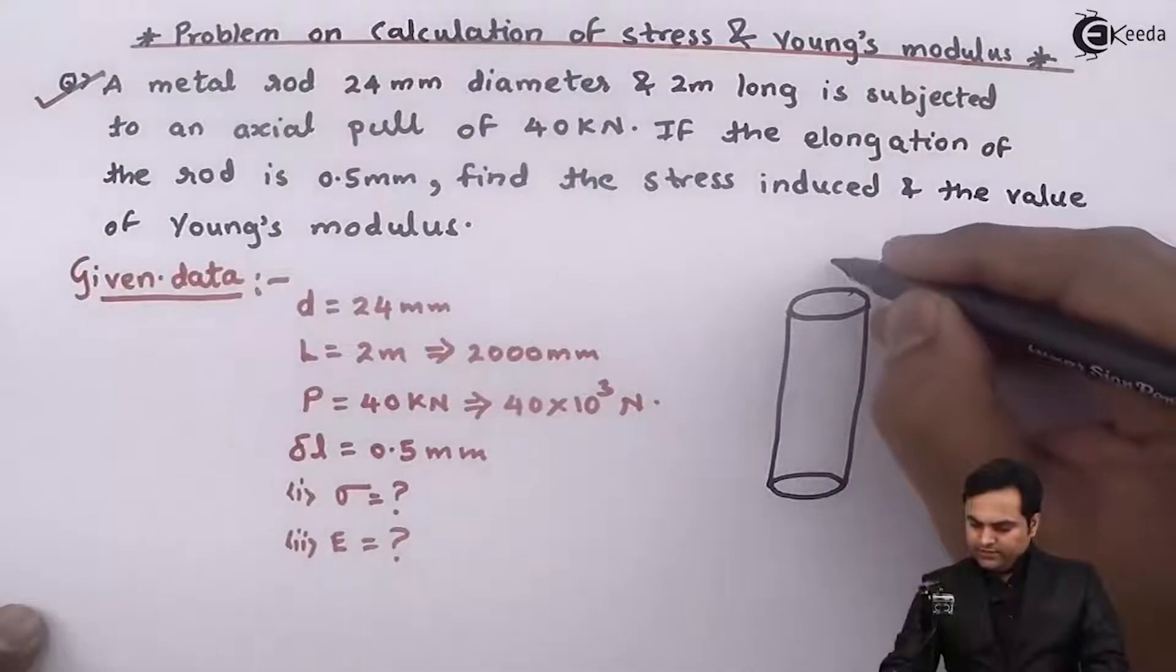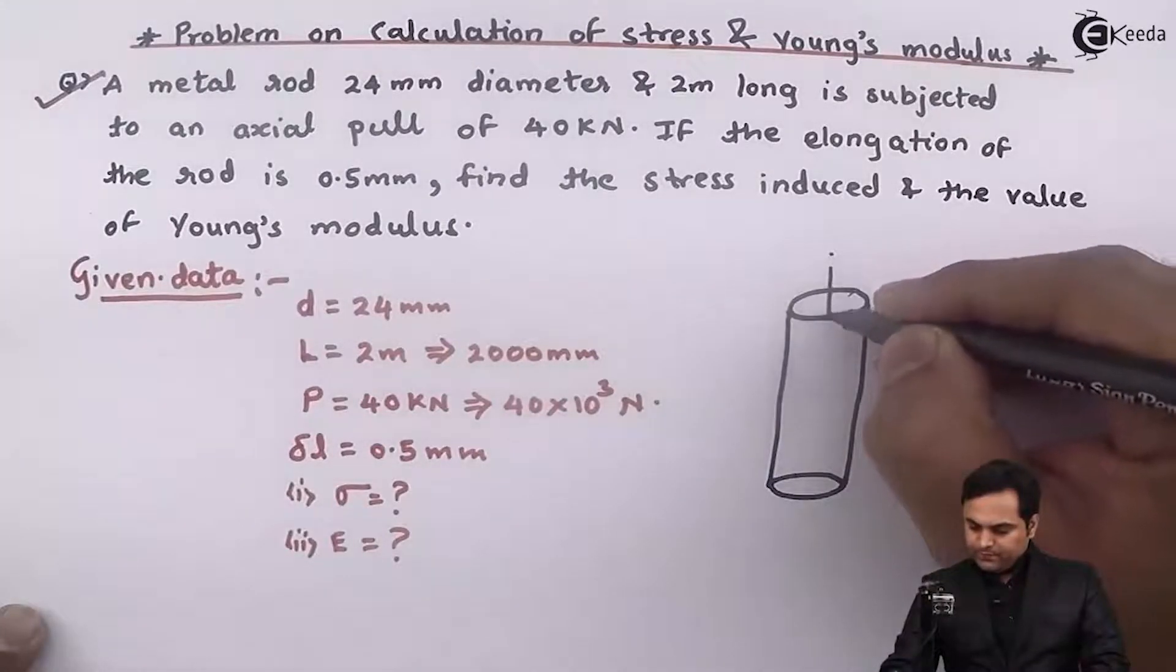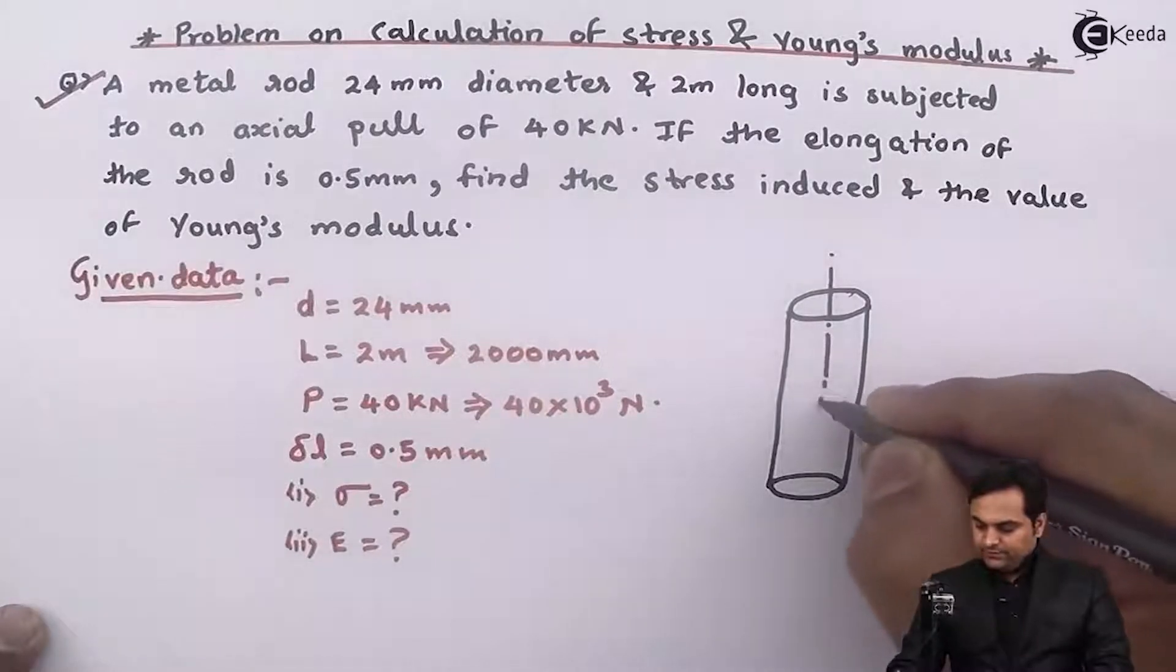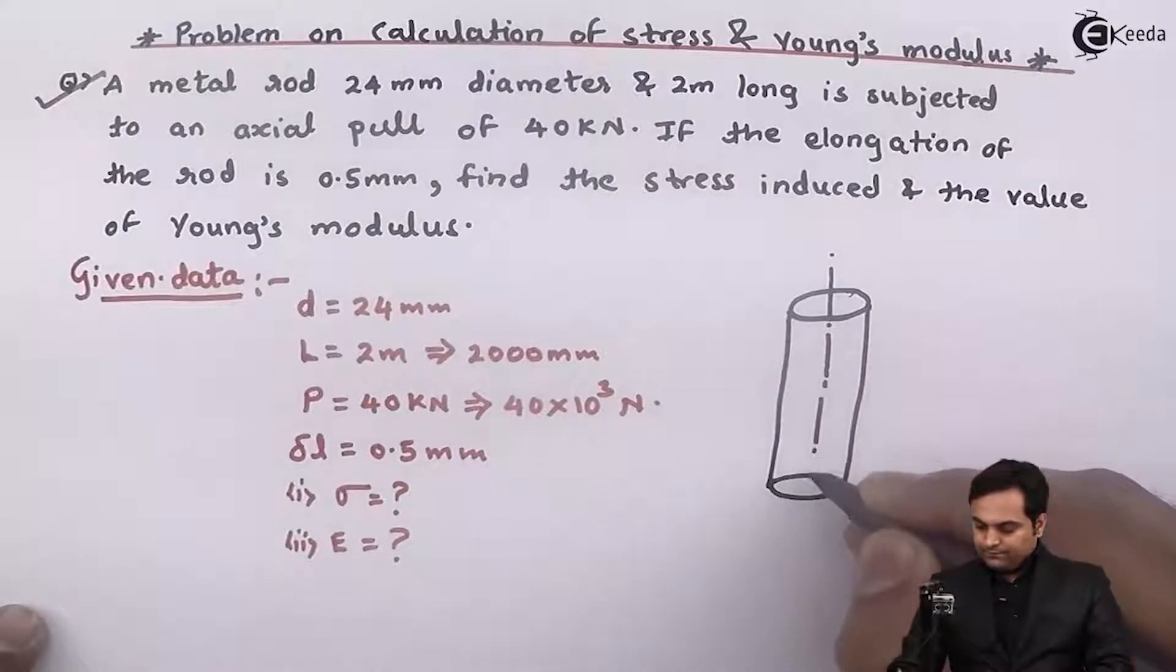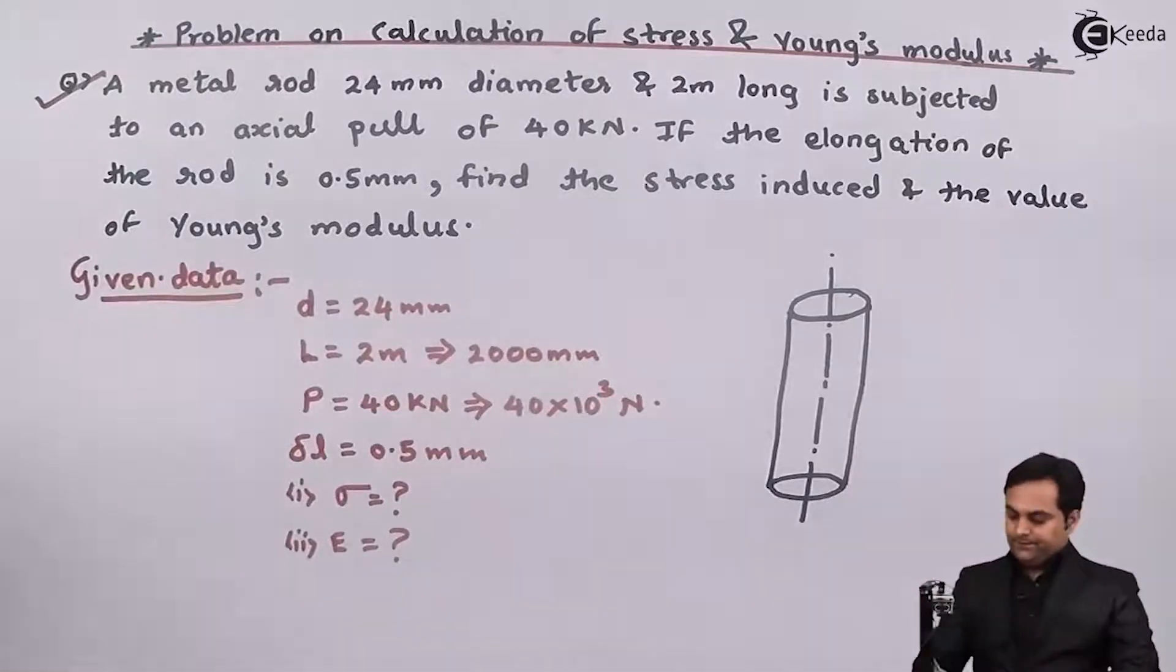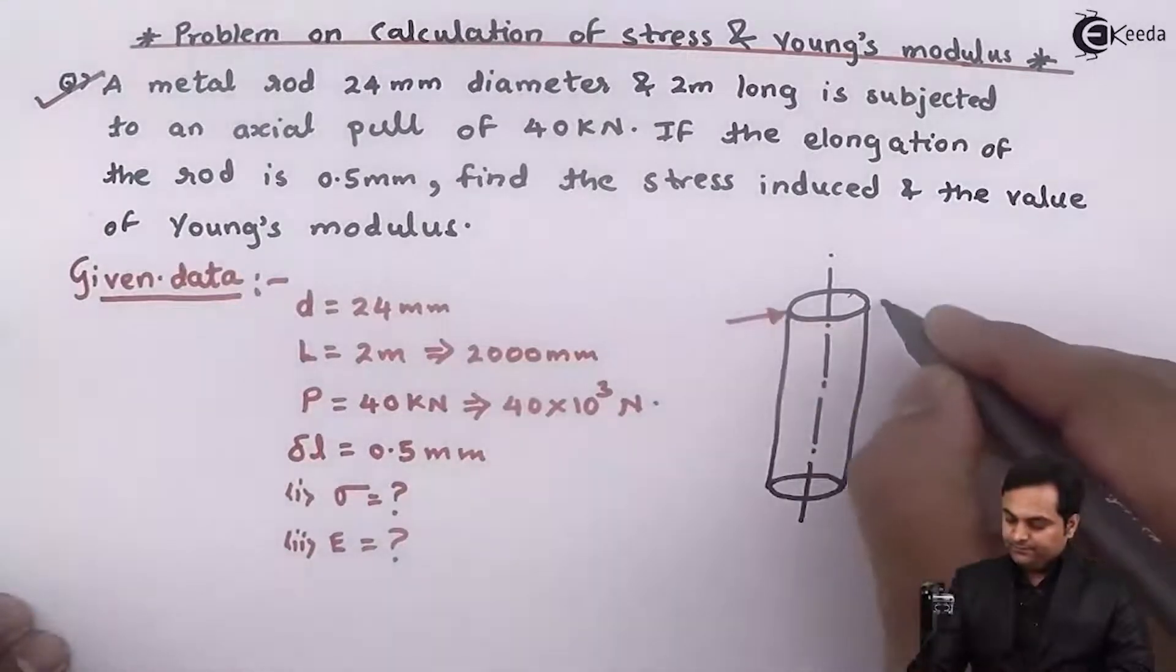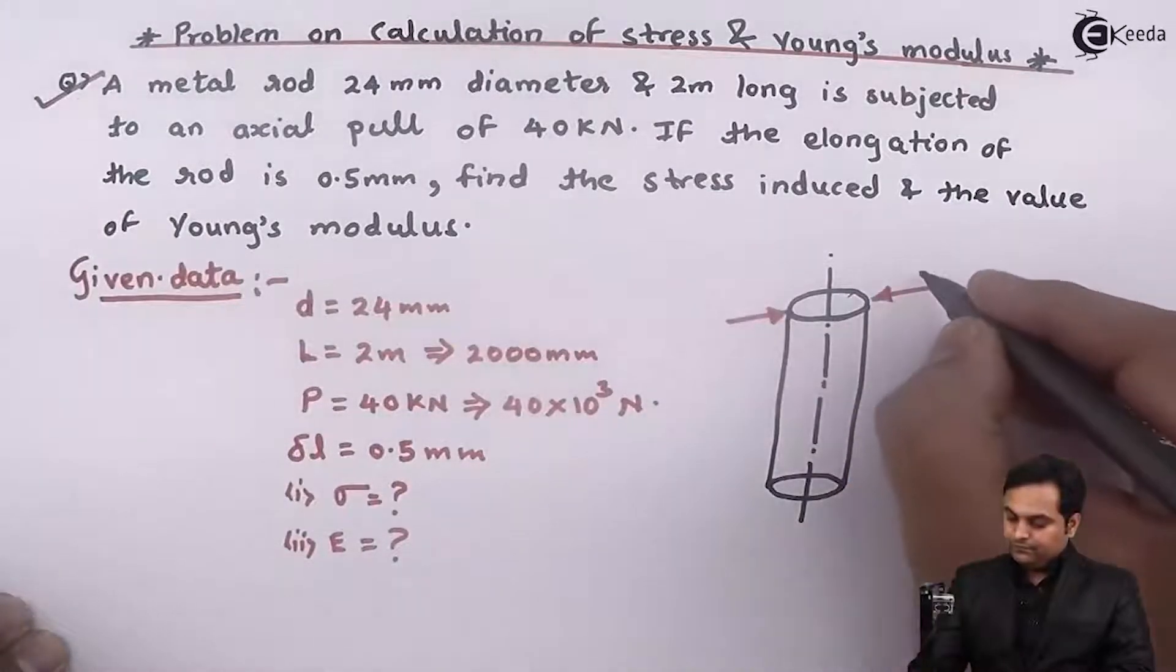Now, here we have a metal rod. This is the axis of the rod. Next, this metal rod is having diameter small d.